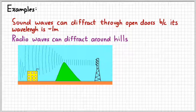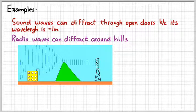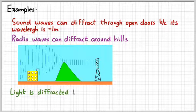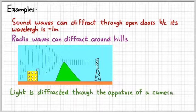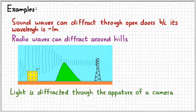Radio waves can diffract around hills and other big barriers — radio waves are pretty big in wavelength. Some radio waves are so big that they'll actually diffract around the earth itself, allowing them to be heard very long distances away. A third example: inside a camera is a tiny opening called an aperture, and light will diffract through the aperture. Using different size apertures, you can get different quality and effects in a photograph by changing the way light diffracts through that opening.